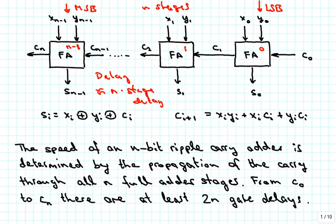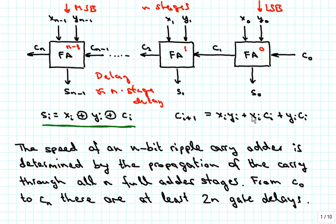The computations that each stage is performing is the sum computation, which is the XOR of XI, YI, and CI — the XOR of the two inputs, the two numbers that we want to add together, plus whatever carry input there is. And then the carry-out is computed as the majority function of XI, YI, and CI, and this is the boolean expression for that.